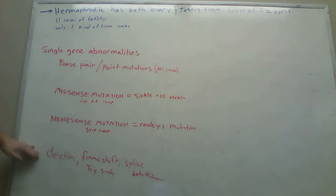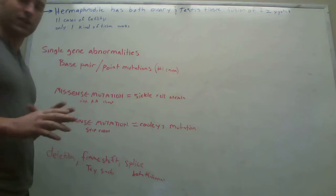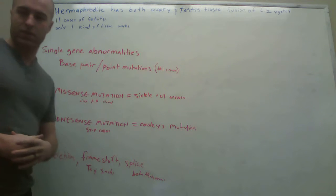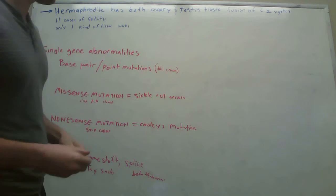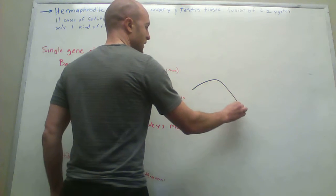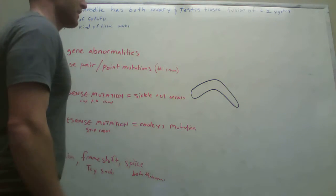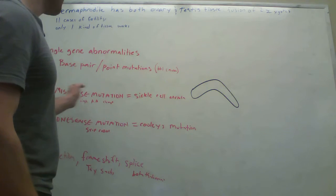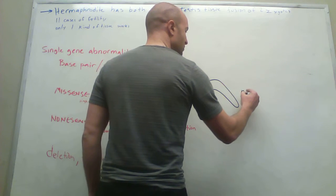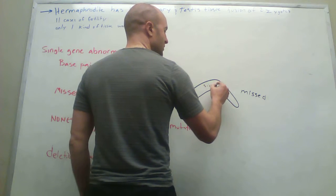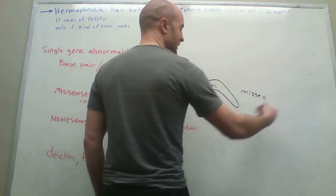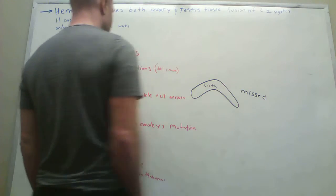There's three different ones here mentioned. There is missense mutation. Missense is where a single amino acid gets altered. The one he wants us to think about is sickle cell anemia. A sickle kind of looks like a boomerang to me. So if you think about missense, I think you threw the boomerang and you missed. Boomerang being a sickle shape, sickle cell anemia, missed, missense. Associate sickle cell anemia with missense.